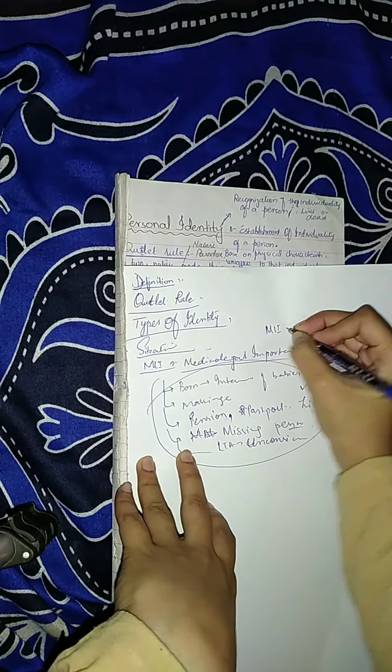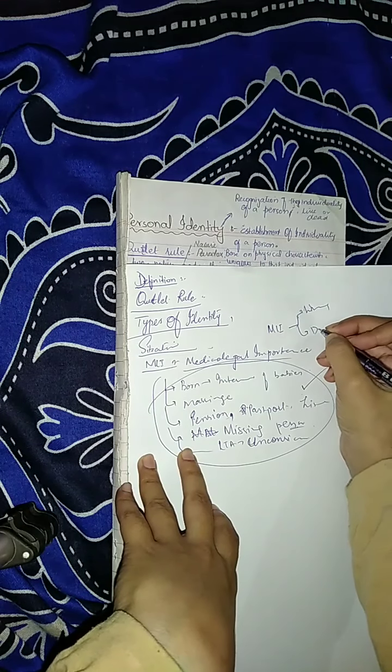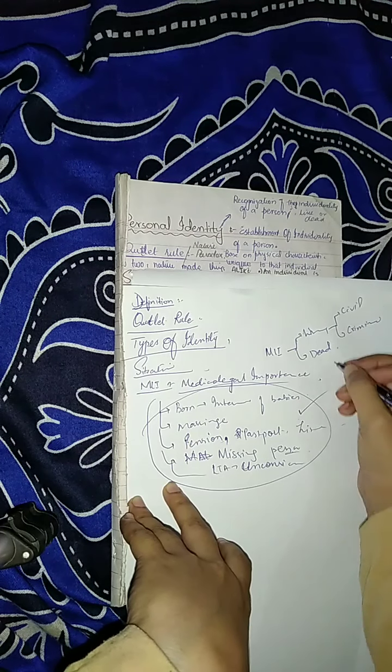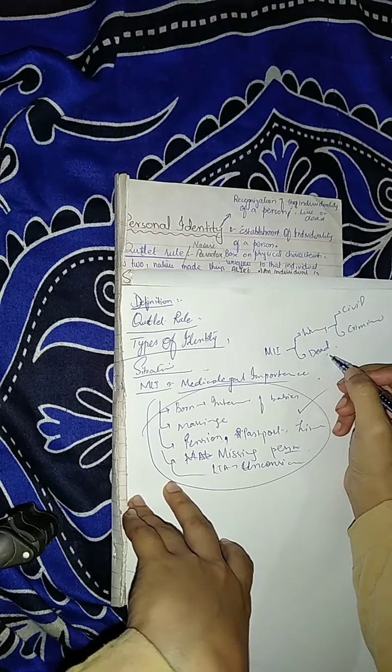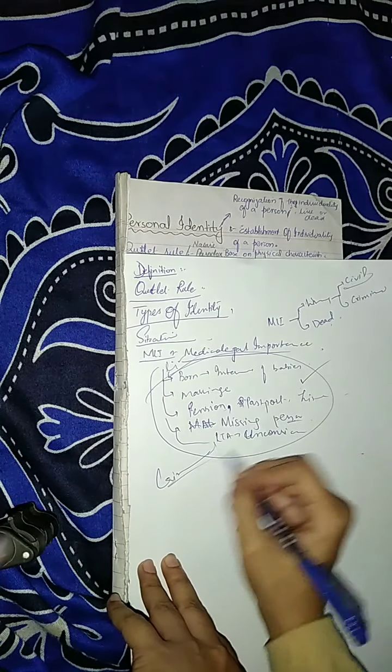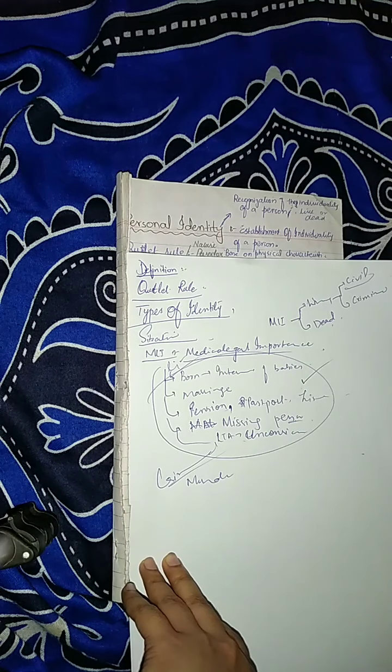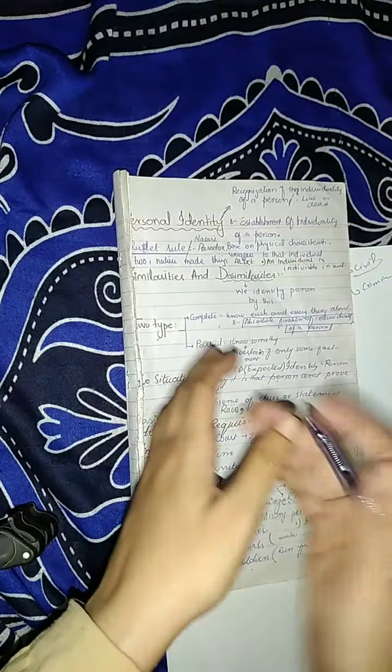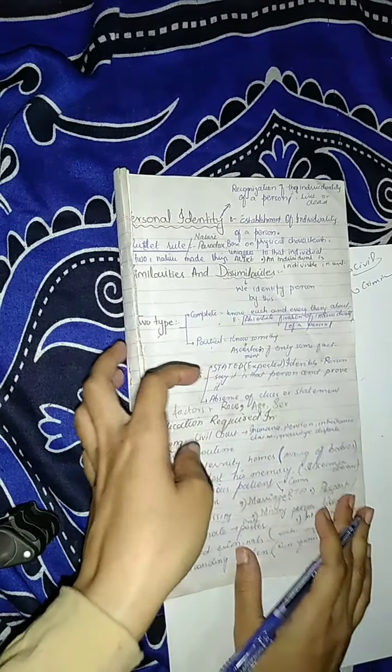Medical legal importance we divide into two things: living and dead. Living has civil cases and criminal cases. Dead also has civil and criminal. What happens in criminal? Murder, impersonate, imposters. Absconding soldiers - to find their identity for their punishment.